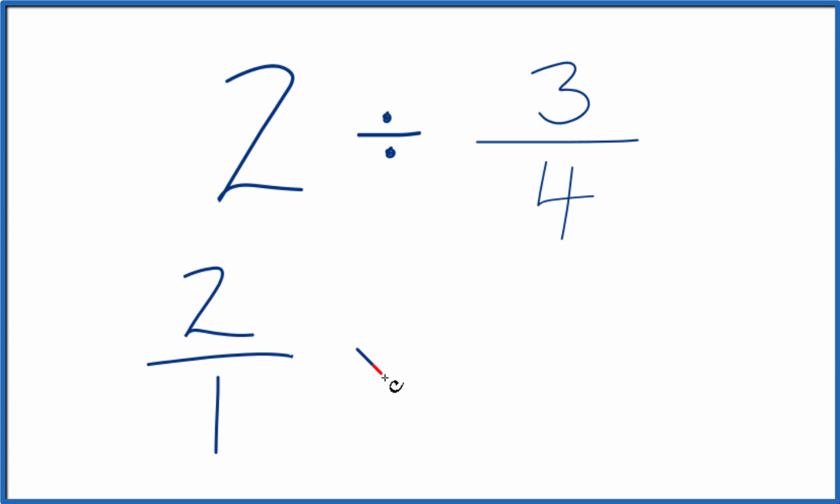Instead of division, we're going to multiply by the reciprocal of 3 fourths. To take the reciprocal for a fraction like 3 fourths, you move the numerator to the bottom, the denominator, up to the top. So now we have 4 over 3, 4 thirds.